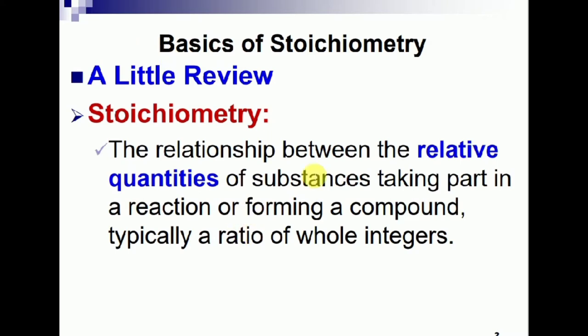Stoichiometry is the relationship between the relative quantities of substances taking part in a reaction or forming a compound, typically a ratio of whole integers. Basically in chemical reactions, two or more reactants react in a chemical reactor to form a useful product. For example, according to Haber's process, 1 mole of N2 reacts with 3 moles of hydrogen to form 2 moles of ammonia. This is the stoichiometric ratio.